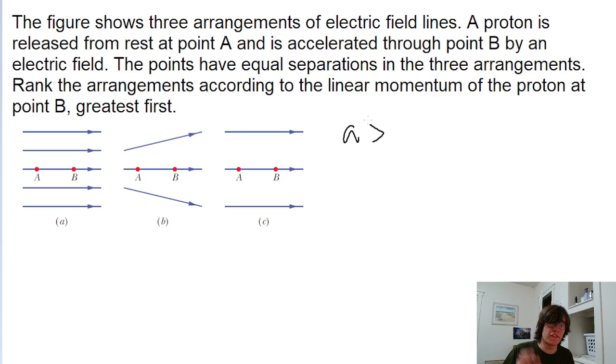Remember that the stronger the field is, the more the proton is accelerated, which means it has a higher velocity, which therefore means a higher momentum. So A has the highest momentum.